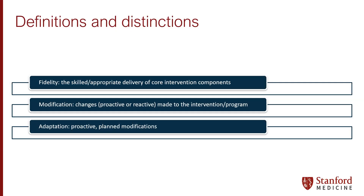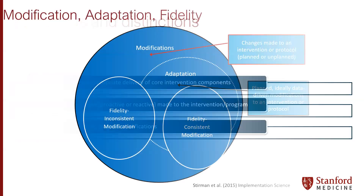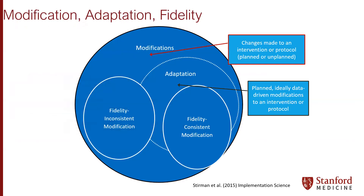Fidelity is the skilled and appropriate delivery of core intervention components or functions. Modifications are changes, whether proactive or reactive, that are made to the intervention or program. Adaptation is a more proactive process of making modifications that are planned and in response to needs identified ideally upfront within an organization or a particular context. In other words, all adaptations are modifications, but some unplanned and reactive modifications might not be adaptations.